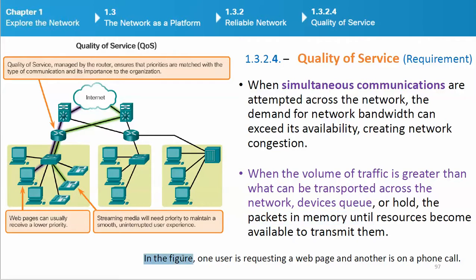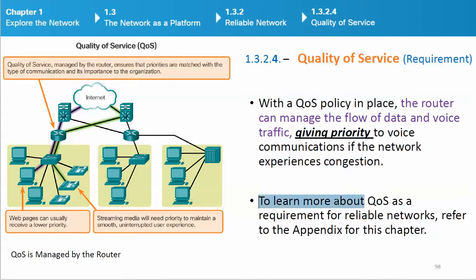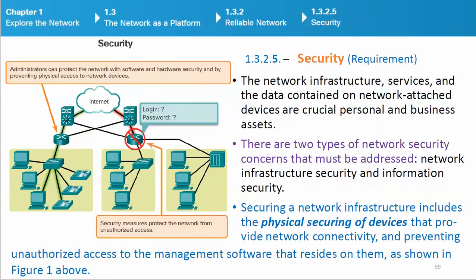With a QoS policy in place, the router can manage the flow of data and voice traffic, giving priority to voice communications if the network experiences congestion.